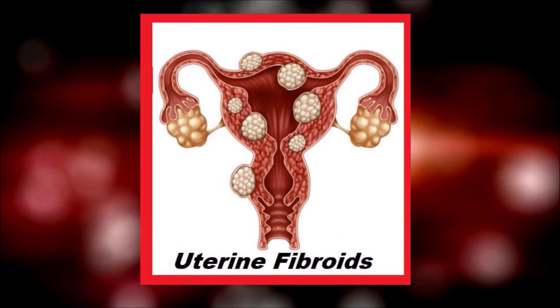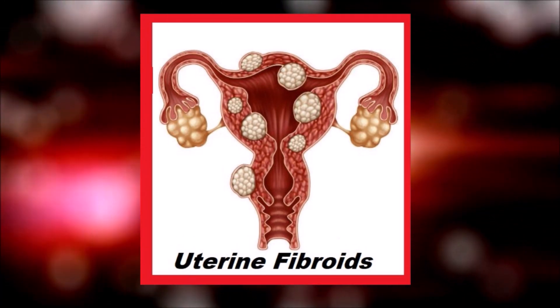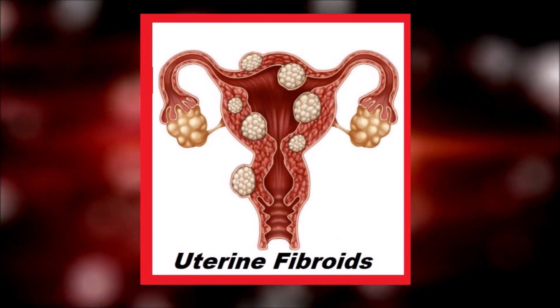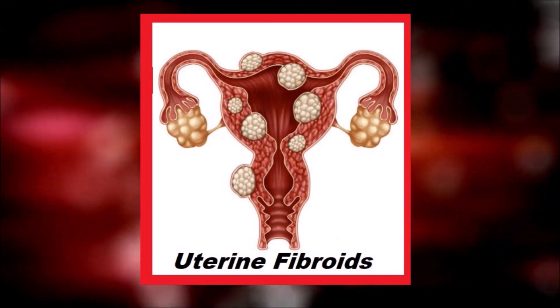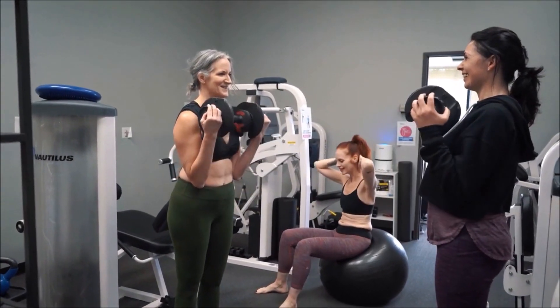Uterine fibroids are bundles of smooth muscle and connective tissue, and although they're sometimes called tumors, fibroids are actually not cancerous. However, because they disrupt the blood vessels and glands in the uterus, they can cause bleeding and loss of other fluids. Around 30% of women over age 30 have at least one fibroid.